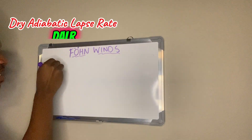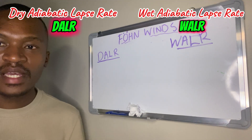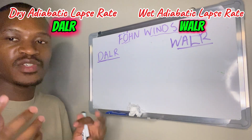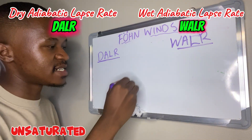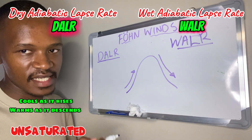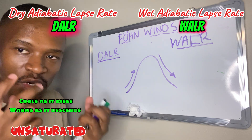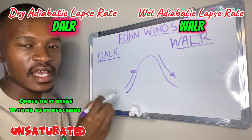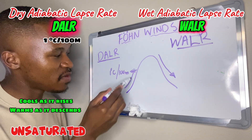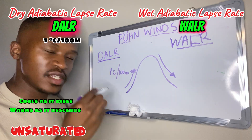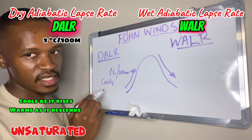We have the dry adiabatic lapse rate and the wet adiabatic lapse rate. The dry adiabatic lapse rate is the rate at which unsaturated air — air that doesn't hold a lot of moisture — cools as it rises and warms up as it descends. This happens at 1 degree Celsius for every 100 meters, meaning every 100 meters the air goes up, it cools by 1 degree Celsius.